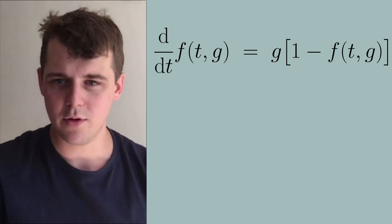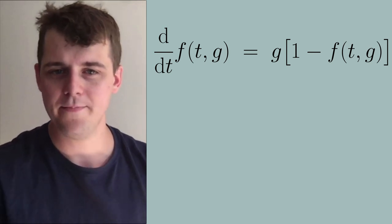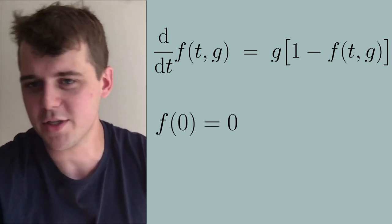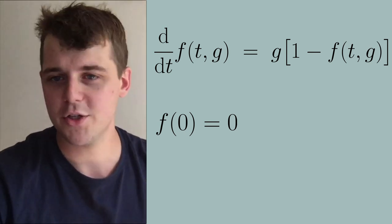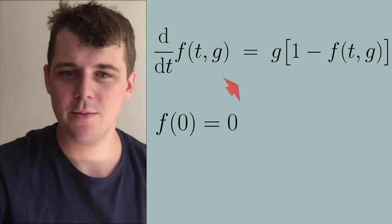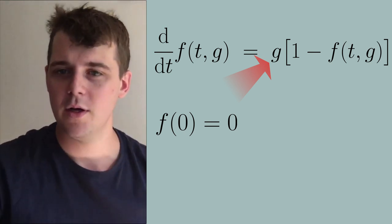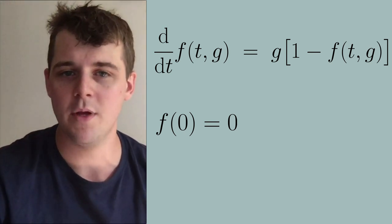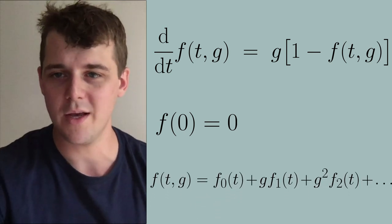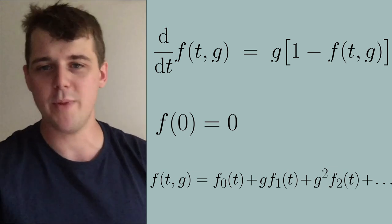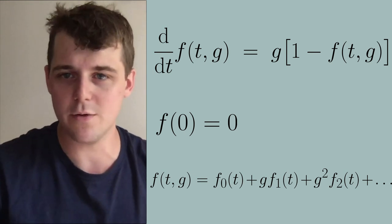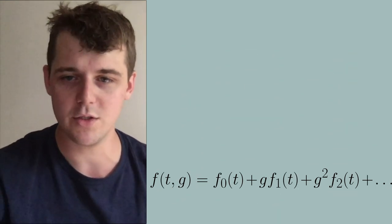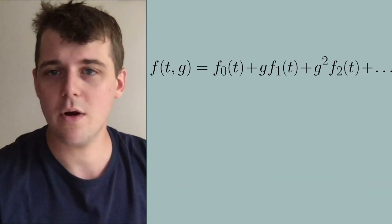This turns out to be a really simple differential equation to solve, but it demonstrates the problem very clearly. We're going to think of this as an initial value problem with some initial condition — we'll set at time t=0 the function is zero. We assume that g is some really small number, so perturbation theory applies. We look for a solution which is basically a series in the small parameter g, expanding f as a function of t and g naively, where f0, f1, and f2 are all time-dependent coefficients.